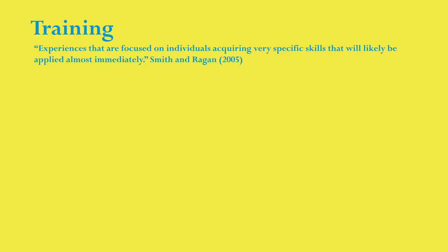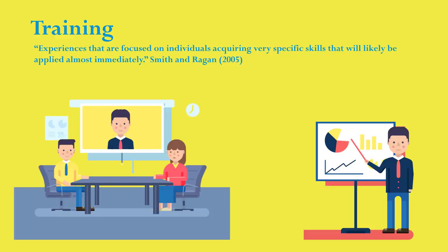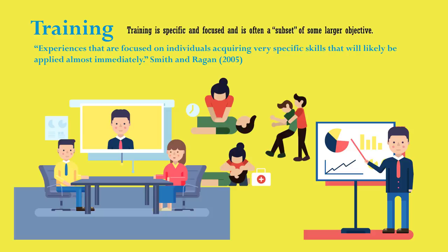Think of jobs — we often think of training as preparing people for jobs. But we also think of training when we are providing specific skills to learners to use in life. Training is specific and focused, and is often a subset of some larger objective.